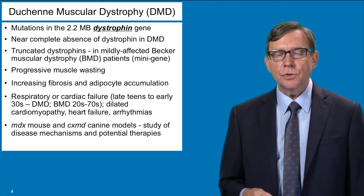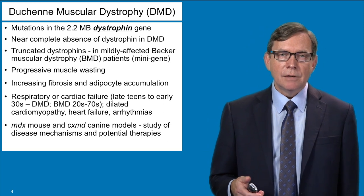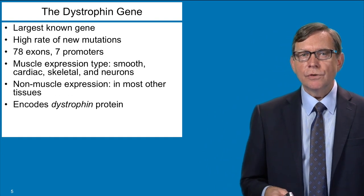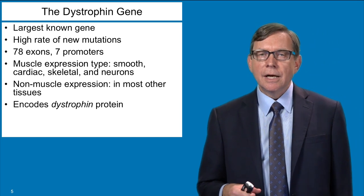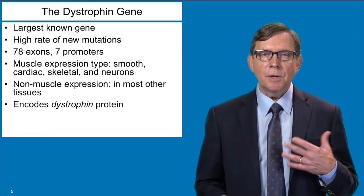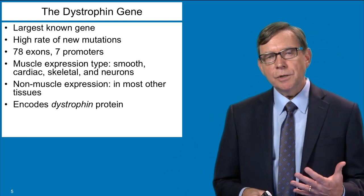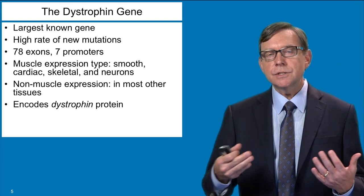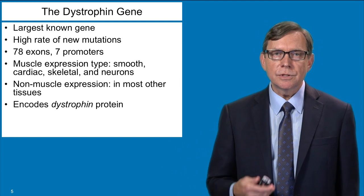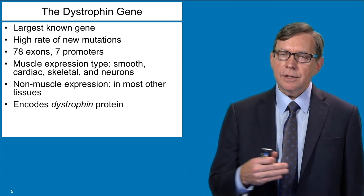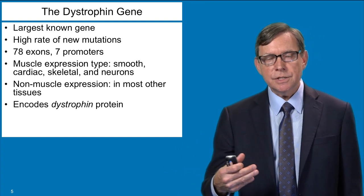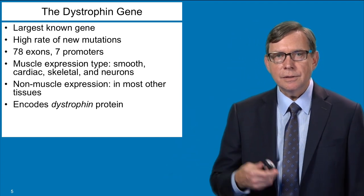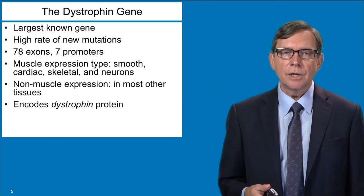An advantage of studying Duchenne and Becker muscular dystrophies is that there's a variety of animal models for this disease. The dystrophin gene is the largest gene that has been identified so far in nature, and it's thought that the enormous size of this gene is responsible for the frequency of the disease. Duchenne muscular dystrophy is one of the most common inherited human disorders, and the large gene has a lot of targets for things that can go wrong with it. There's a very high spontaneous new mutation rate in this gene, meaning that not everyone with the disease has inherited a defective gene from their parents — sometimes a new mutation arises in the family for the first time.